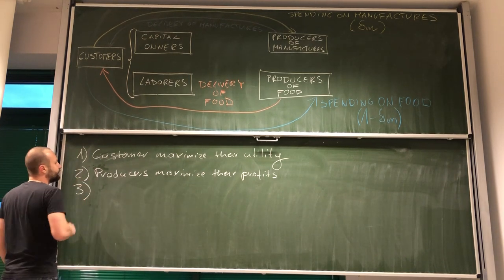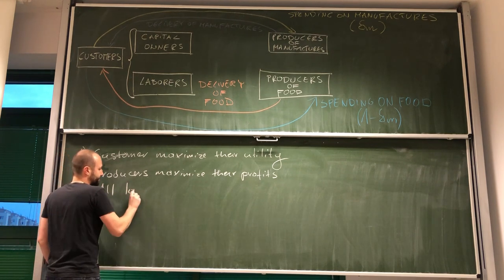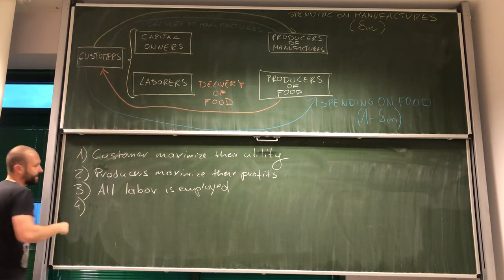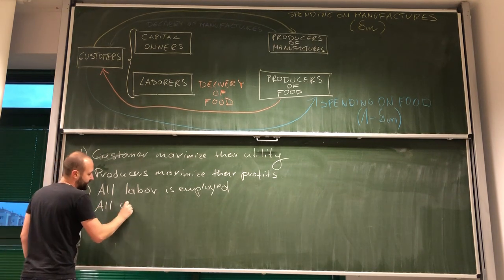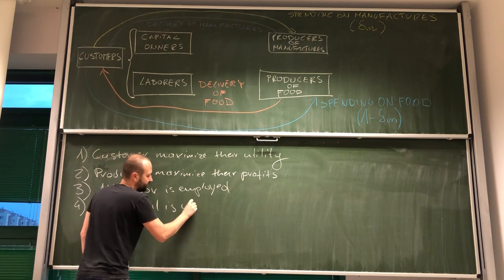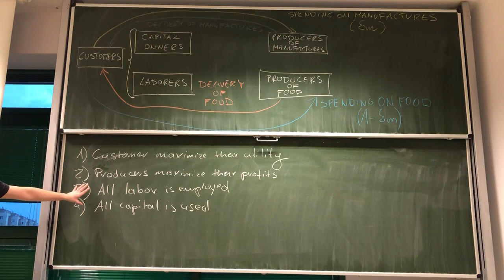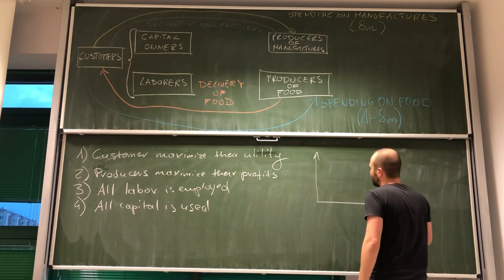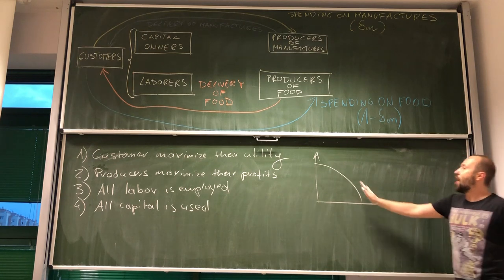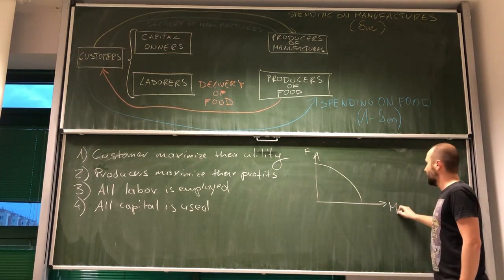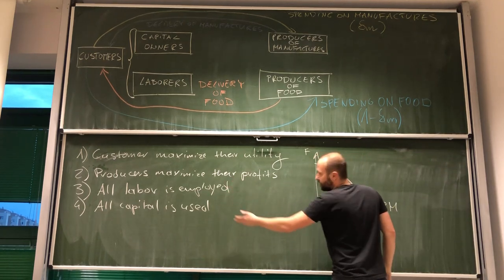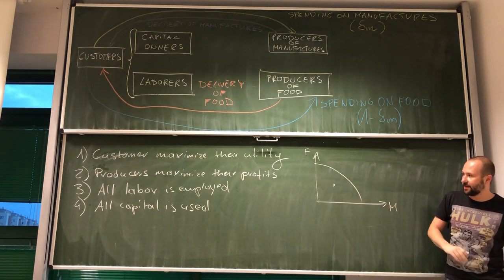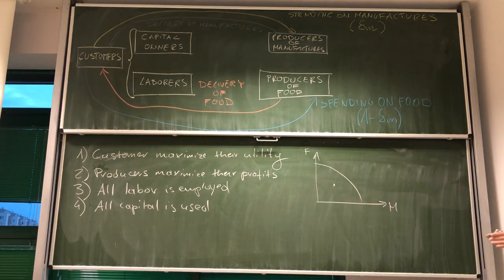Now, then, condition number three is, all labor is employed. And, of course, we can get the fourth condition, that all capital is used. What do these two conditions guarantee? If we look at production possibility frontier, we want to be on production possibility frontier, right? If not all labor is employed, or all capital is employed, we would be somewhere below the production possibility frontier. And this is something that we don't want.